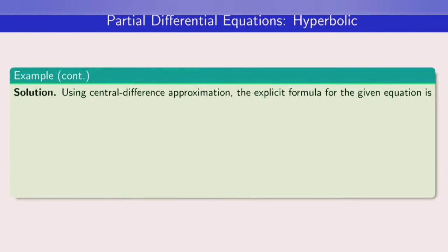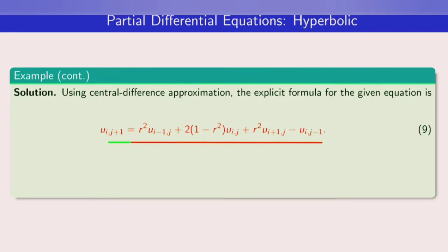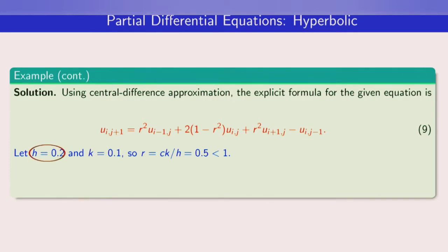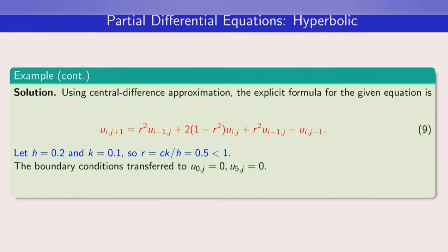Using the central difference approximation, the explicit formula is: u(i, j+1) = r²·u(i−1, j) + 2(1−r²)·u(i, j) + r²·u(i+1, j) − u(i, j−1). For this case, h = 0.2 and k = 0.1, so r = c·k/h = 0.5. Since r = 0.5 ≤ 1, the convergence condition is satisfied and the method can be applied. The boundary conditions give u(0, j) = 0 and u(5, j) = 0 for all j.